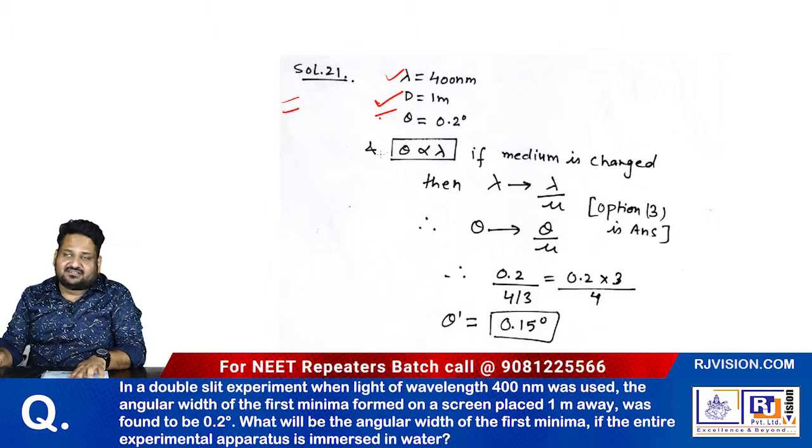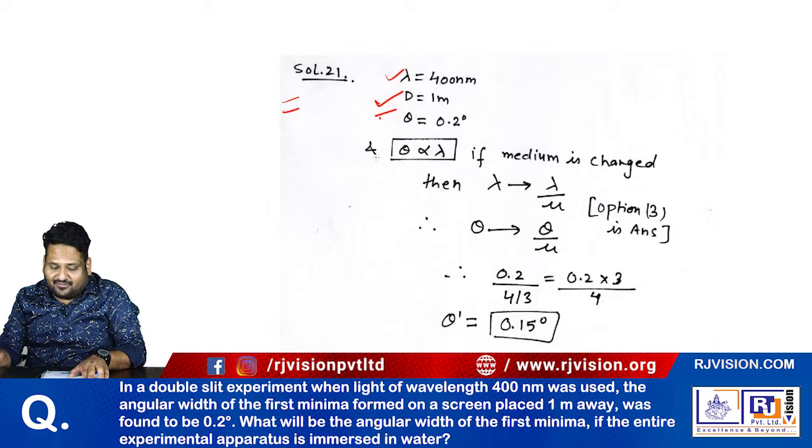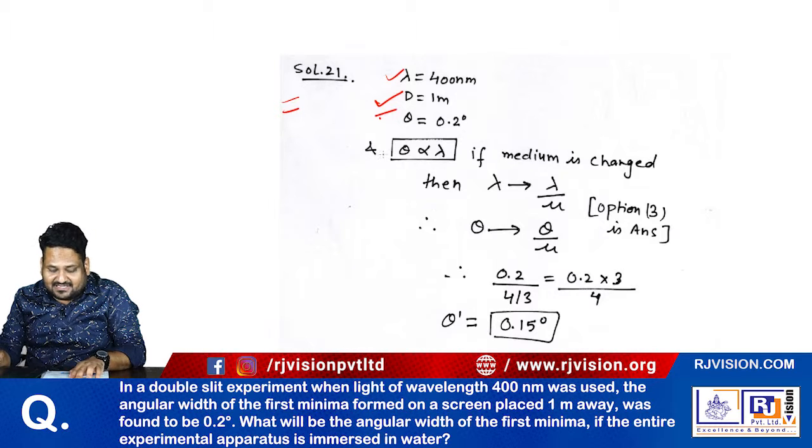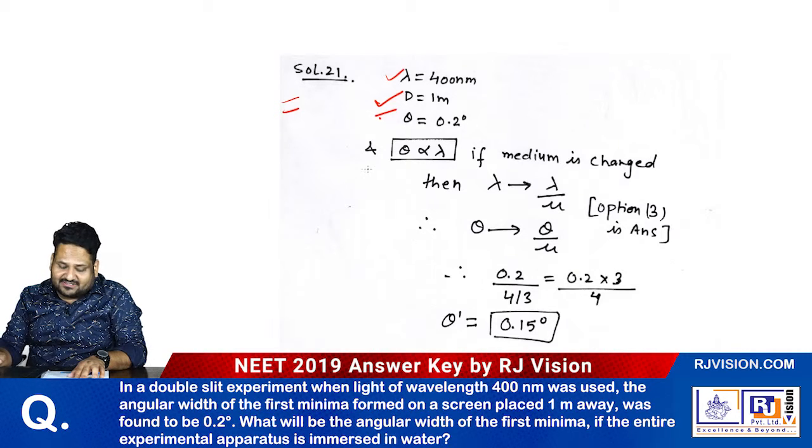The screen is at distance 1 meter away. What will be the angular width of the first minima if the entire experimental apparatus is immersed inside water?